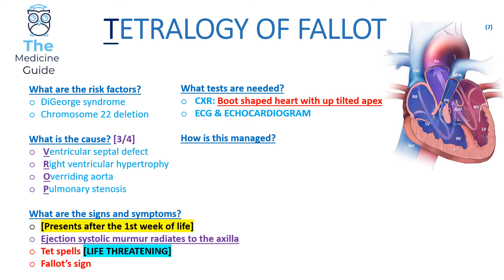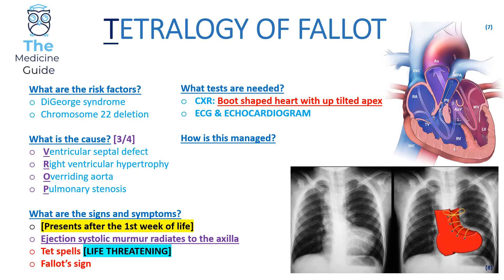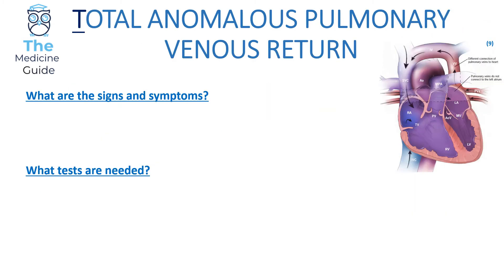Tests for Tetralogy of Fallot include chest X-ray, ECG, and echocardiogram. The chest X-ray has a very classic appearance: a boot-shaped heart with an upward-tilted apex. Management is surgical.